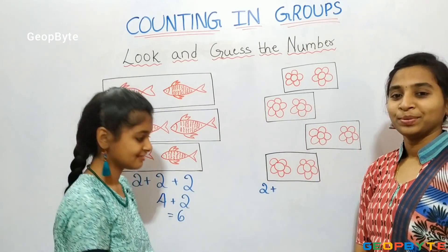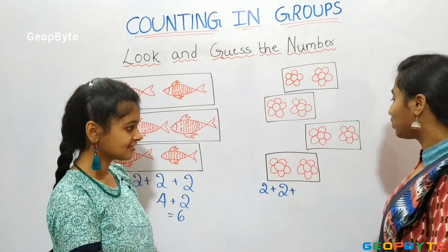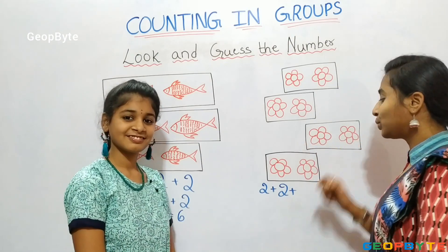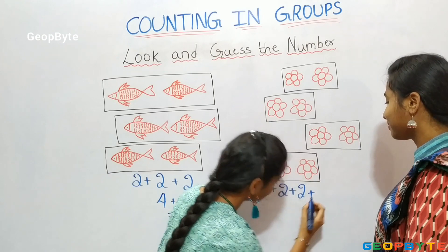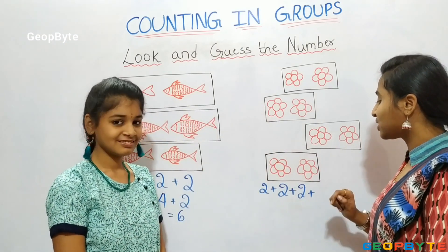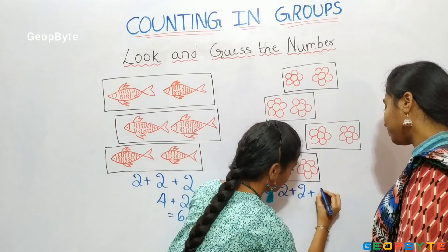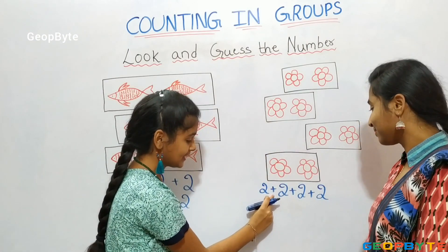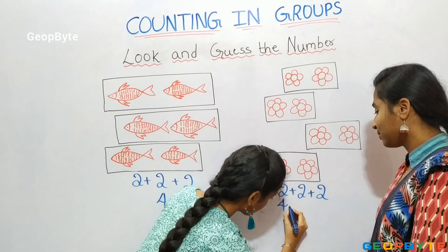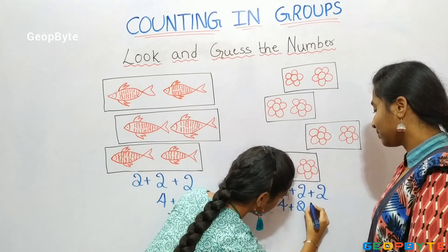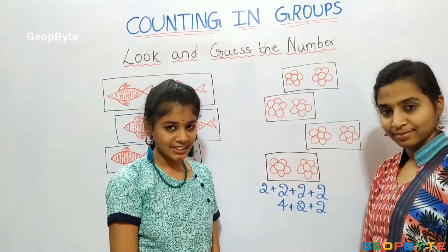Let us write 2. We have 2 flowers in this row, 1, 2. Let us write 2. We have 2 flowers in this row, 1, 2. Let us write 2. 2 plus 2 is equal to 4. 4 plus 2 is equal to 6.